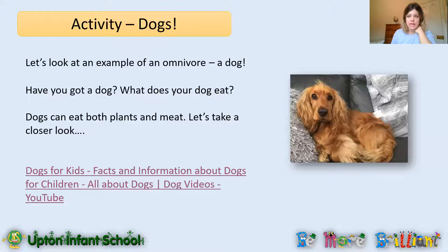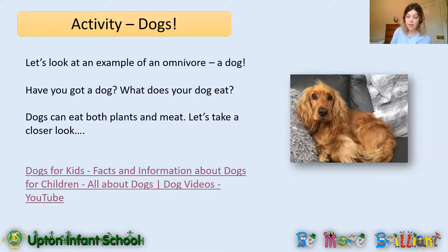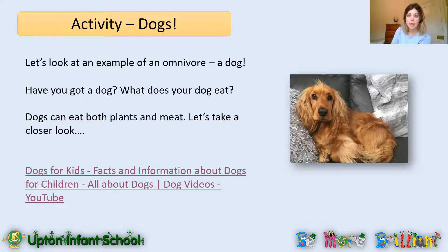Our activity today is we're going to look at an example of an omnivore — dogs. Dogs are naturally omnivores and can eat plants and meat. Have you got a dog at home? I feed my dog a mixture — sometimes dried dog food with meat in, but I might add some vegetables to make it a bit healthier, like some carrots, or I might give him some fish. So I can give my dog a variety of things. We're going to watch a video now that will look at a bit more about what dogs can do.